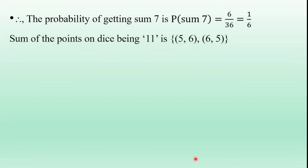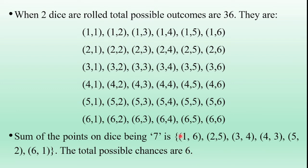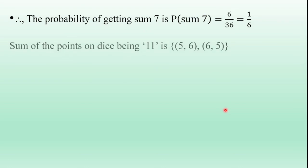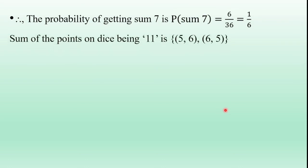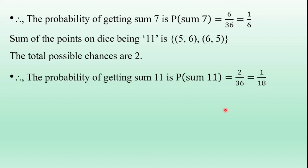For Event B — sum of the points on the dice being 11 — out of the 36 possible outcomes, the combinations giving sum 11 are: (6,5) and (5,6). There are 2 possible chances. Therefore, the probability of getting sum 11 equals favorable chances divided by total outcomes = 2/36 = 1/18.